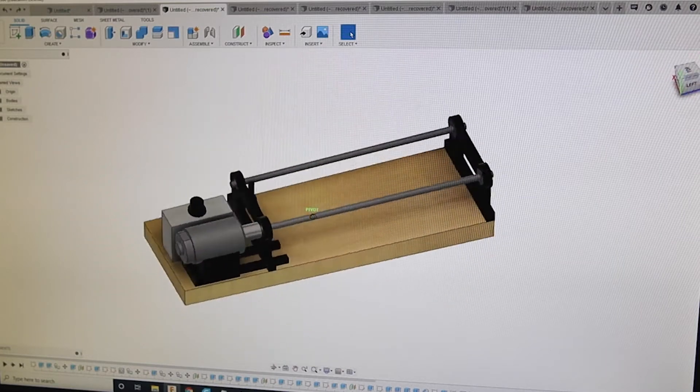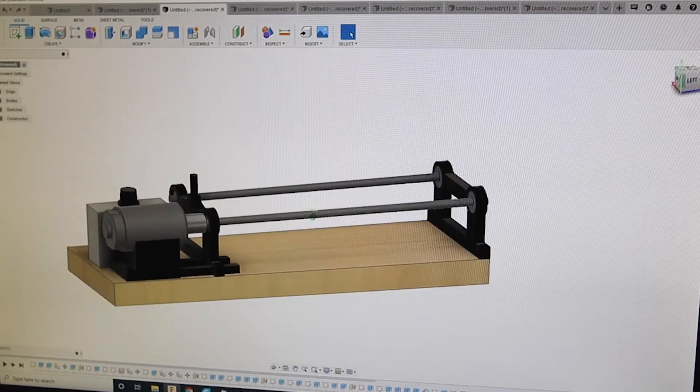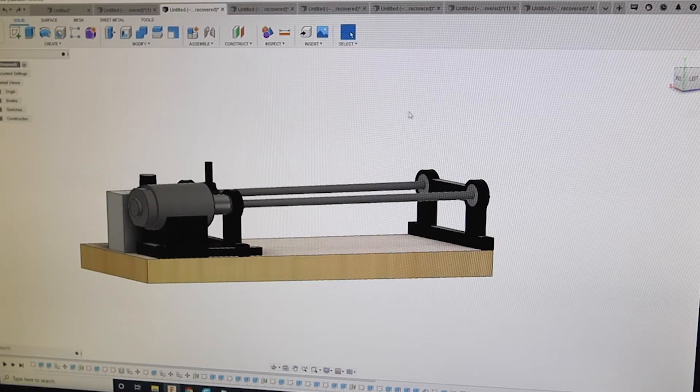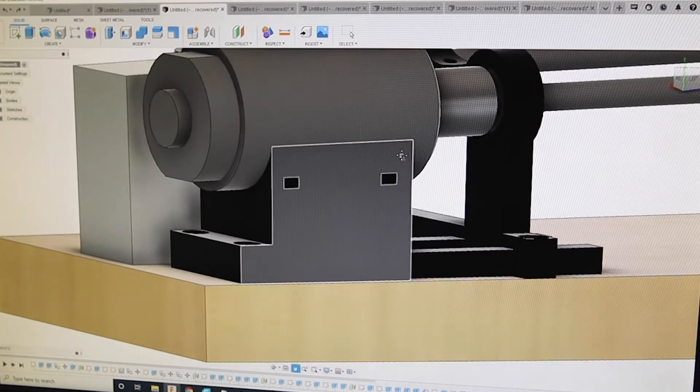So right after that, we have a coupler that goes onto our motor. Holding the motor in place, we have a motor mount right here. As we zoom in right here, we can see our motor mount.